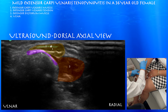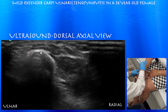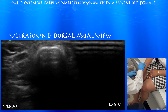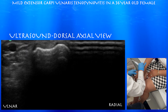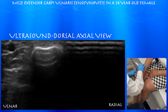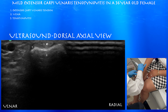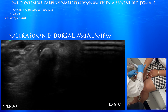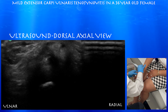Here's the extensor carpi ulnaris tendon beginning to form — it looks like just a thin sliver within the muscle just above the ulna. Now we can see the tendon starting to form above the ulna. There's a little concavity within the surface of the ulna where you see the extensor carpi ulnaris tendon. You can appreciate a tiny sliver of fluid around the extensor carpi ulnaris. There can typically be a cleft within the extensor carpi ulnaris tendon, which is essentially a normal variant. Here you can appreciate a moderate amount of tenosynovitis around the extensor carpi ulnaris tendon, and you can also appreciate that cleft within the tendon as well.